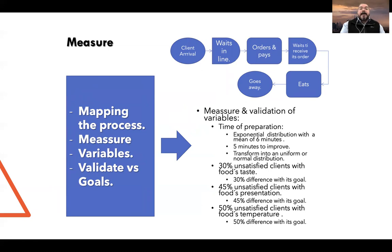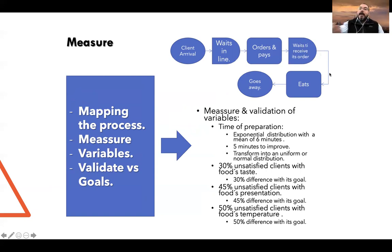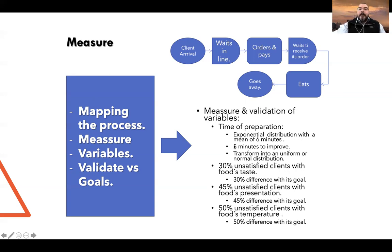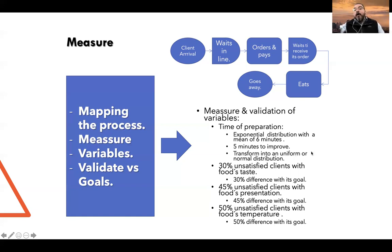In the Measurement part, we must map the process. We have a flow chart here that represents the client journey: from arrival, the client waits in line, orders and pays, waits until they receive their order, eats, and leaves. For the measurement and validation of variables, we measured the time of preparation. A time study of this process found that the preparation time behaves like an exponential distribution with a mean of five minutes. We have five minutes to improve because we want just one minute as a goal, and we want to transform this exponential distribution into a uniform or normal distribution so that the variability of preparation times will be less.